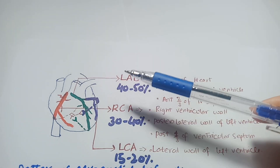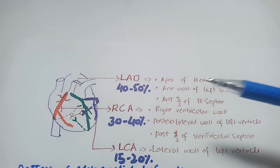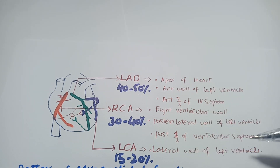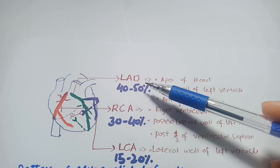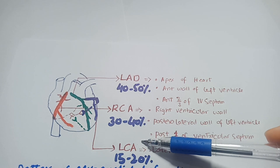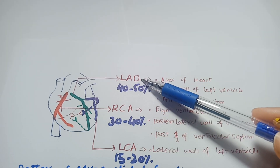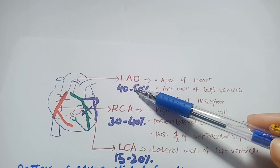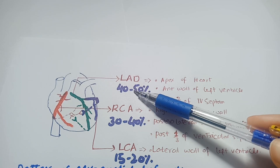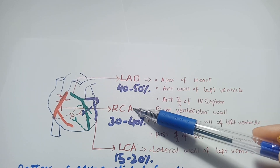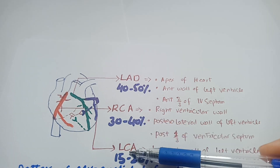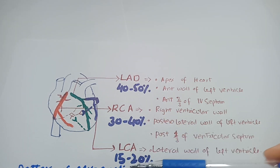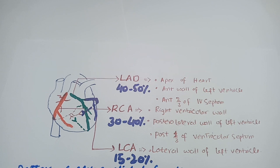The third artery is the left coronary artery, which supplies the lateral wall of the left ventricle and is involved in 15–20% of cases. In summary, the left anterior descending involves more than 50% of cases, the right coronary artery 30–40%, and the left coronary artery 15–20% of myocardial infarction cases.